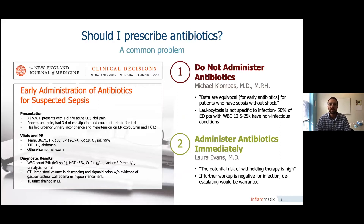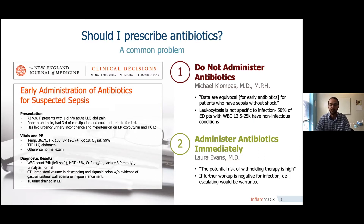The common problem we see in practice all the time is the question of whether or not to prescribe antibiotics. A couple of years ago in February of 2019, the New England Journal put together a case study about a 72-year-old woman who presents with a one-day history of left lower quadrant pain. She has a history of constipation and urinary retention, and her exam is notable for tachycardia and tenderness in the left lower quadrant. Lab results show a white blood cell count of 24,000 with a left shift, a little bit of hemoconcentration, and a moderate lactate of 3.9. CT shows a large amount of stool without evidence of edema or hypo-enhancement and she has urinary retention. Two separate physicians weighed in, in a point-counterpoint way, to figure out whether or not to administer antibiotics.